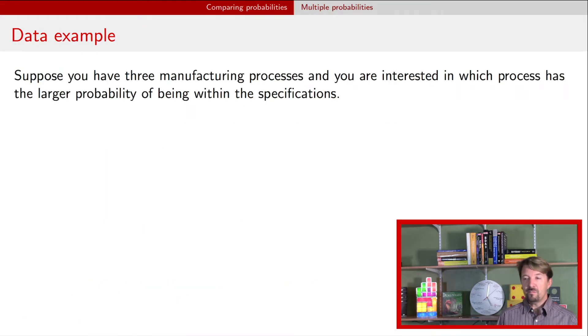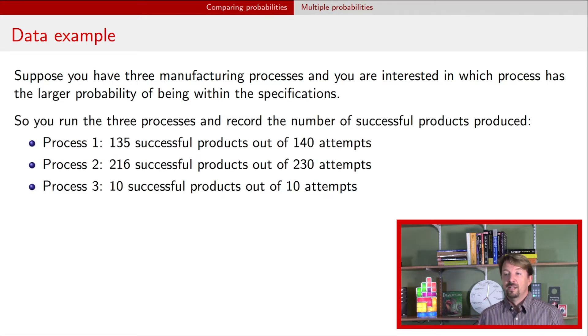Okay, so here's a data example. It just extends the data example that we had before. So we have two processes. Now we're adding a third. In each of the processes, we're just going to record how many times that process successfully created a product that was within our design specifications. And so we have now just added this process three. And this process three, maybe it was only a pilot trial. So we only tried a very short run, but it happened to get 10 out of 10 attempts successfully in the specification range.